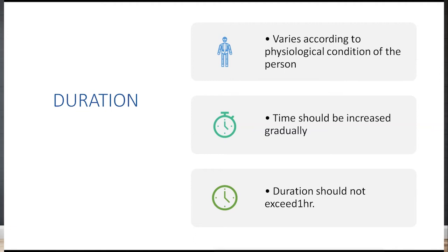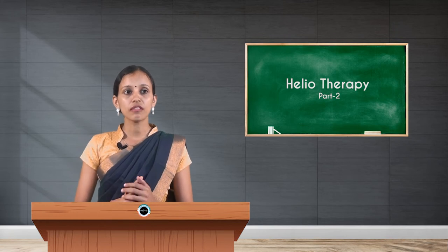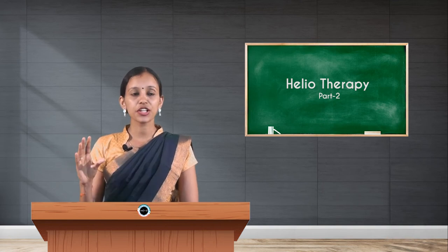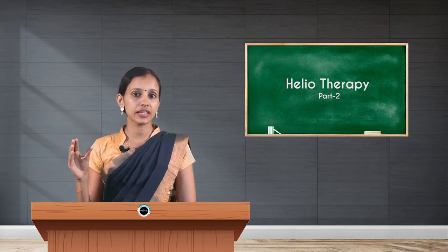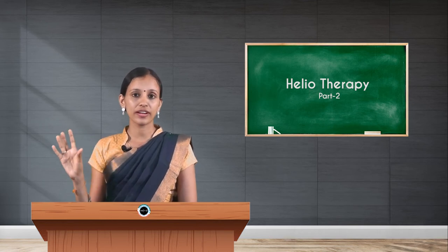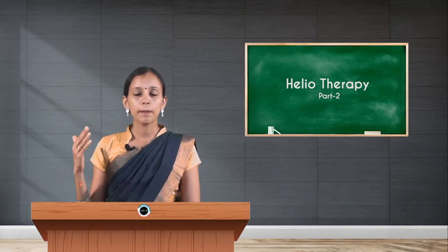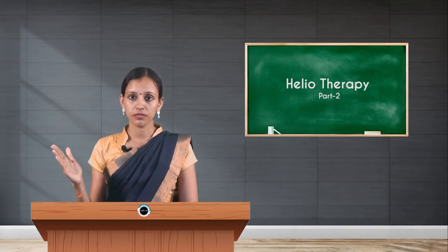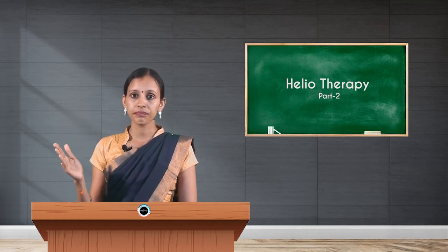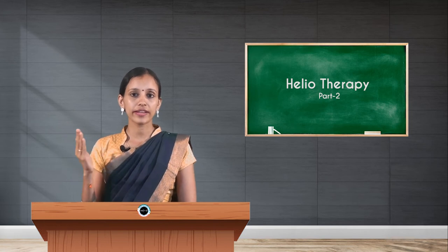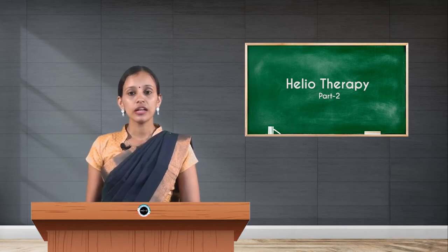The duration of sun bath varies for each individual and depends upon the physiological condition of the person. It should be increased gradually. In the beginning, the first sitting can be up to 20 minutes, and gradually — looking at the stamina and condition of the patient — you can increase the duration. It should not exceed more than one hour; the ideal duration is 45 minutes to one hour, and the minimum is 15 to 20 minutes.